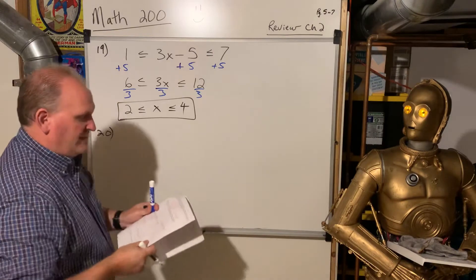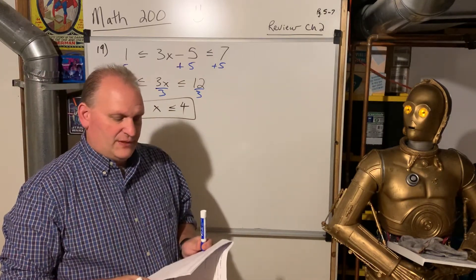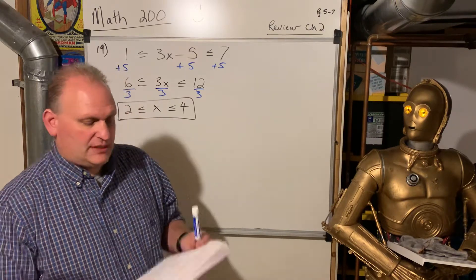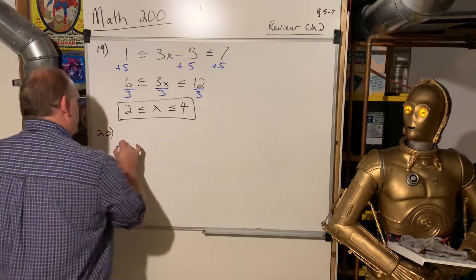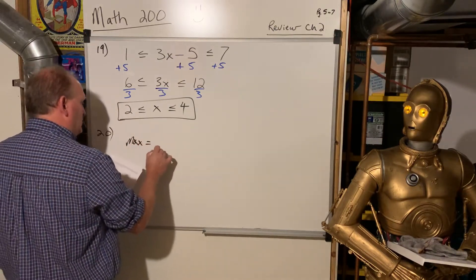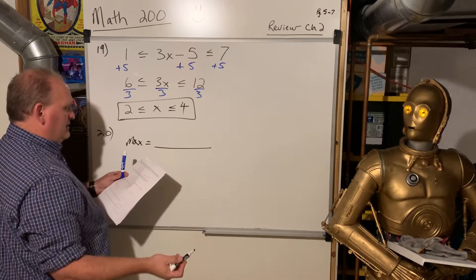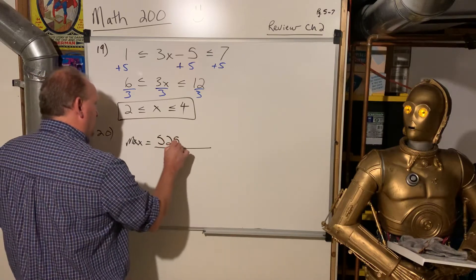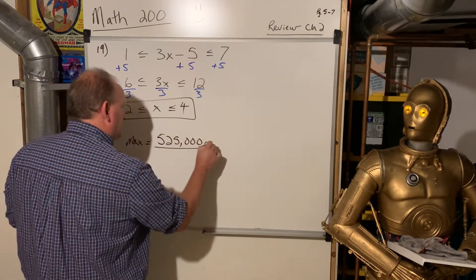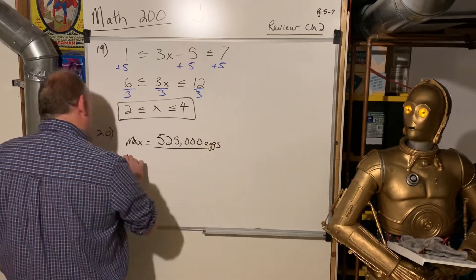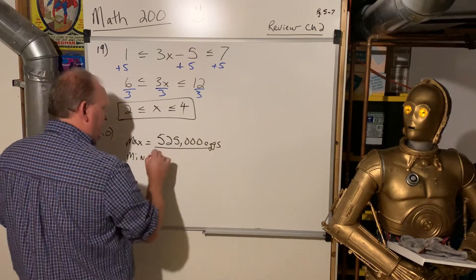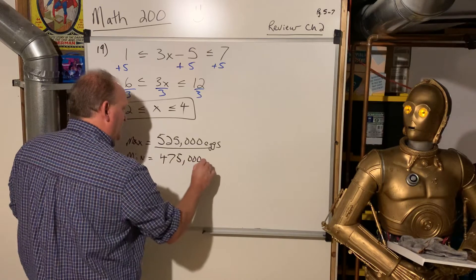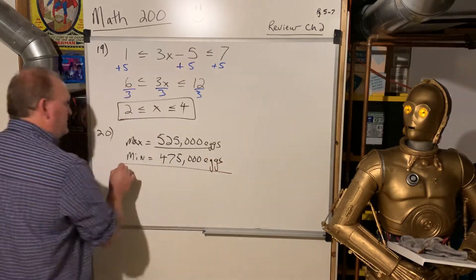All right, 20. A chicken farm produces 500,000 eggs per day. Total can vary as many as 25,000 eggs. What's the max? What's the min? Okay, so that's a pretty easy problem. The max is you add the 25,000 to the 500,000, so it could be as much as 525,000 eggs. And then the min would be going back to center, back to 500,000, and then taking off 25,000, so 475,000 eggs.